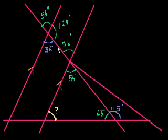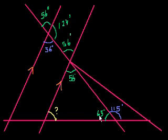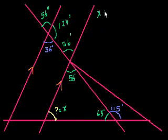So what have we done so far? These are parallel lines, so corresponding angles are equal — this 56 degrees equals this 56 degrees. And this green angle and this purple angle are supplementary, so they add up to 180. If this is 115, then this is 65, which is 180 minus 115. Now we know two angles of a triangle. If we know two angles, we can figure out the third. Let's call this x.